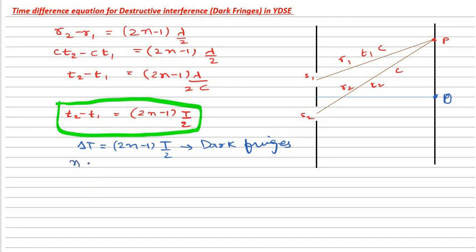You can substitute N is equal to 1, so you are talking about first dark fringe. Your answer, delta T time difference would be, put N equals 1, so it would be capital T by 2. That means at this point if there is first dark fringe, then the time difference would be T by 2. And again, for second dark, you can calculate delta T to be N equals 2, so it would be 3T by 2.